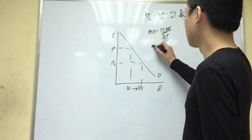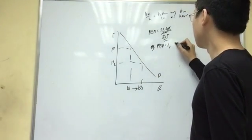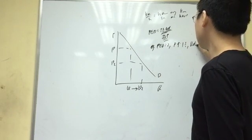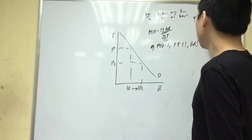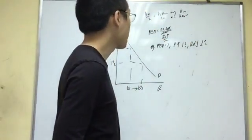So for example, if PED equals to 2, it means that the price increased 1%, QD decreases by 2%. So that is the whole idea.